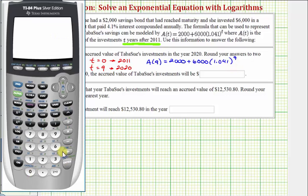So 2,000 plus 6,000 times 1.041, I'm going to raise this to the ninth power and press enter. So the approximate value would be $10,614.06.